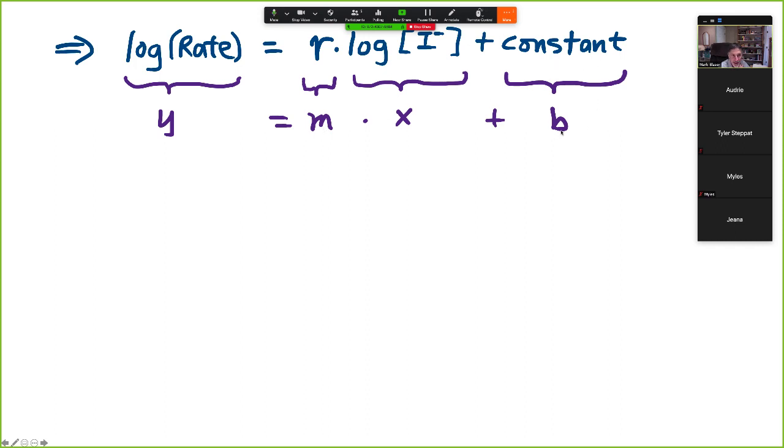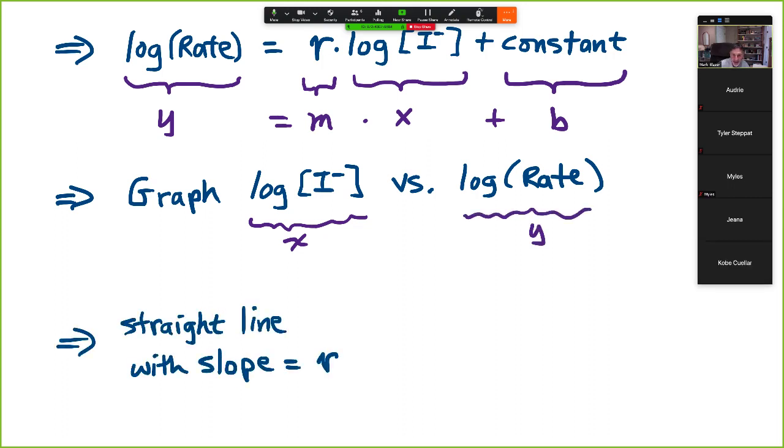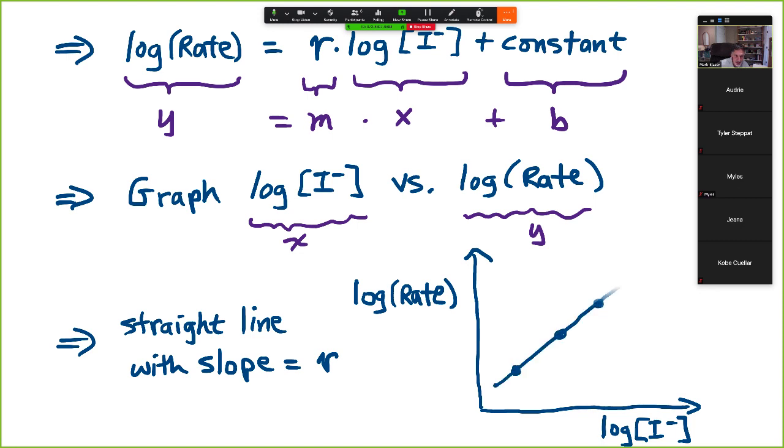And so, believe it or not, this equation is actually the equation of a straight line Y equals MX plus B, if our Y is log of rate and our X is log of I minus, and then our exponent or order is the slope. And the constant is our Y intercept, and we actually don't care about that. And so if we were to graph log of I minus, which is X versus log of rate, what we should get is a straight line with slope of R. And so your graph will look like this, log of rate versus log of I minus gives you a straight line, and then the slope will be R.